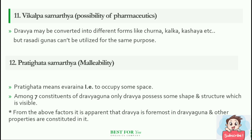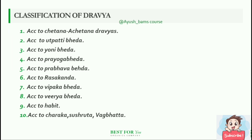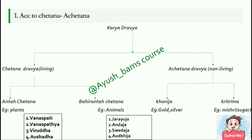From the above factors, it is apparent that Dravya is foremost in Dravyaguna and other properties are constituted in it. The classifications of Dravya are: according to Chetana-Achetana Dravyas, according to Utpatti bheeda, Yoni bheeda, Prayoga bheeda, Prabhava bheeda, Rasakandha, Vipaka bheeda, Virya bheeda, according to habits, and according to main authors such as Charaka, Shushruta and Vagabhatta.